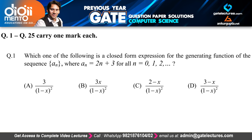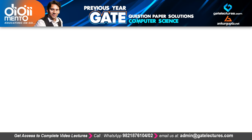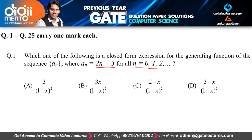The first question is asking: which of the following is a closed form expression of the generating function of the sequence An, where An = 2n + 3 for all n = 0, 1, 2, and so on? They are giving us some options, so we have to find the generating function for this An and select the matching option. Let me take a new PPT page to solve this question. What is given is An = 2n + 3.